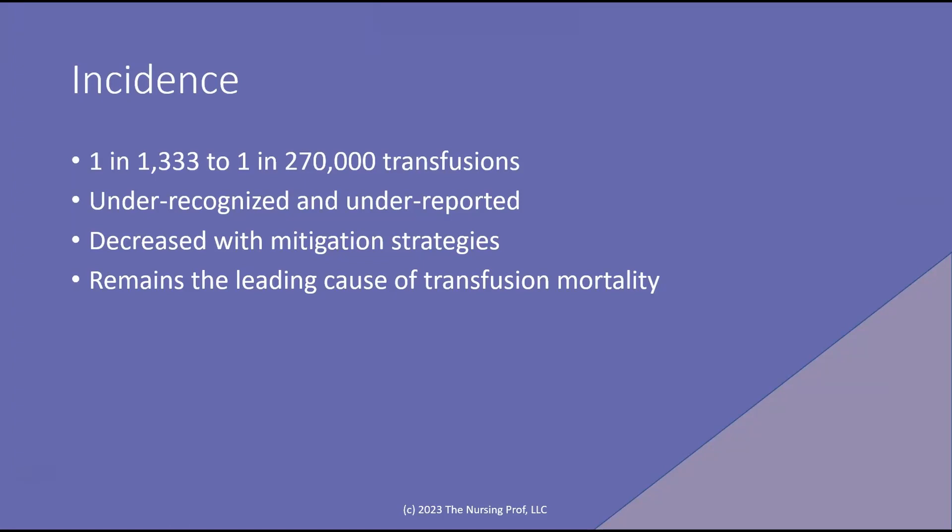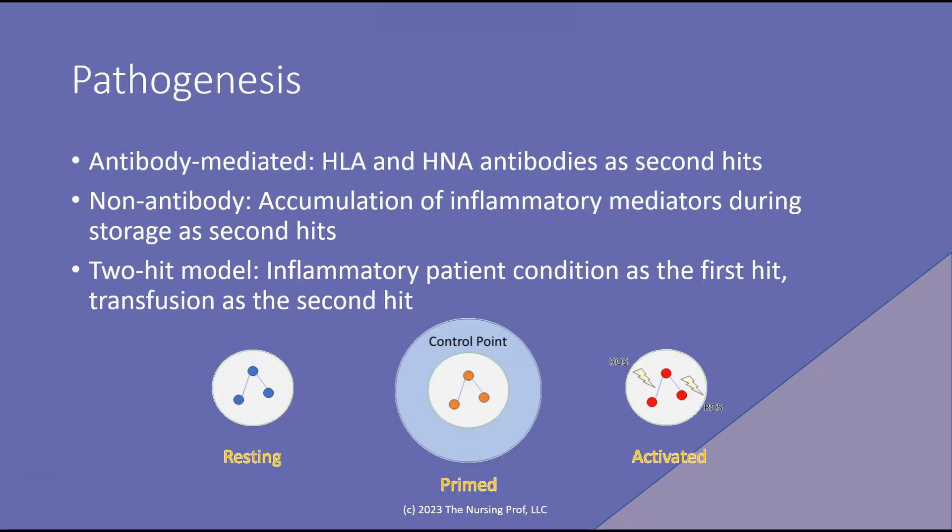Incidence is about 1 in 1,300 to 1 in 270,000 transfusions. It's not very common, but we want to be looking for those people at risk because that's where the incidence really goes up. We can decrease the incidence with mitigation strategies, and it remains the leading cause of transfusion-related mortality.